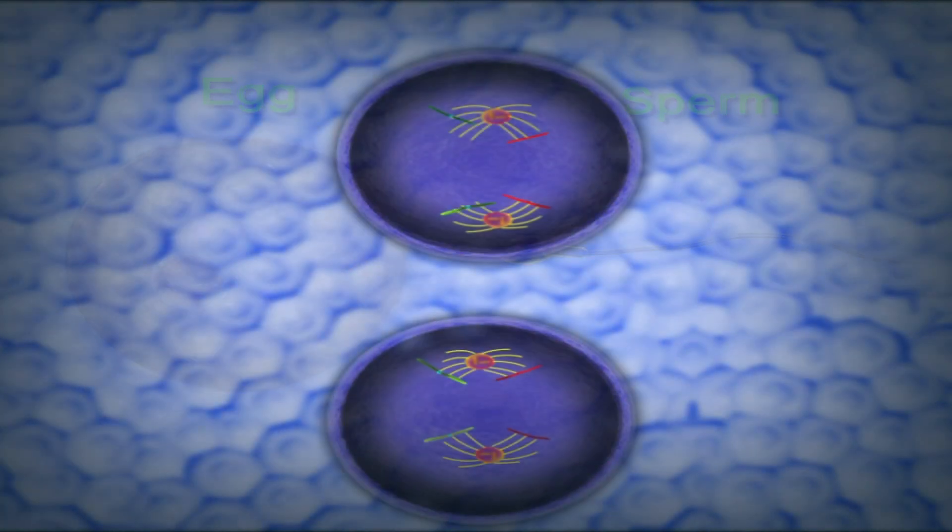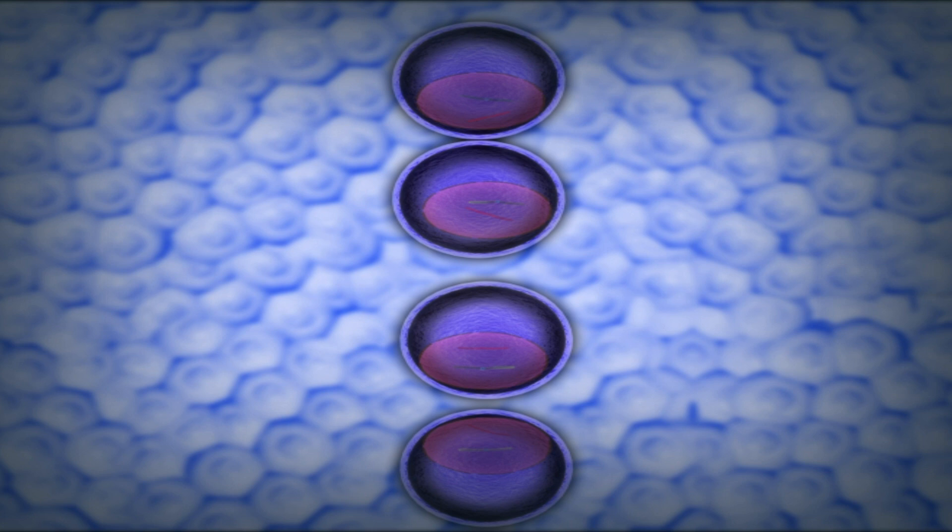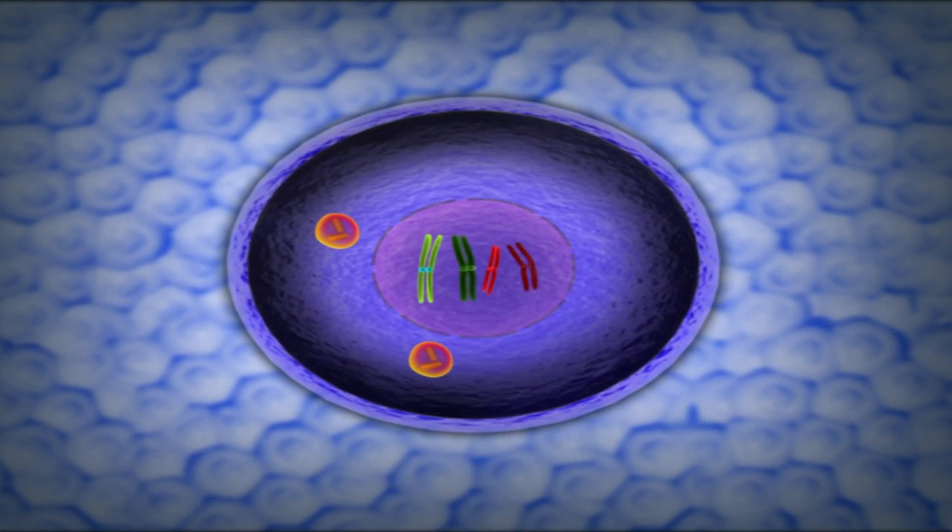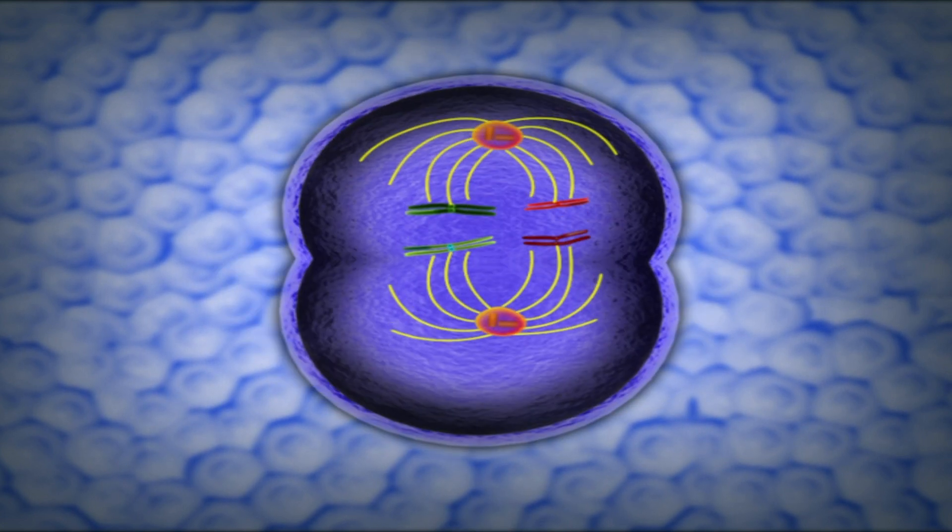Meiosis results in a diploid cell forming four haploid cells and involves two successive nuclear divisions: meiosis 1 and meiosis 2.